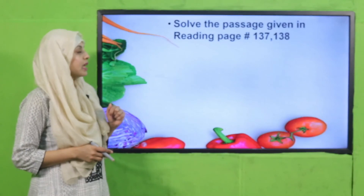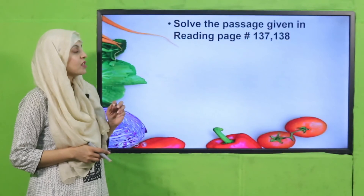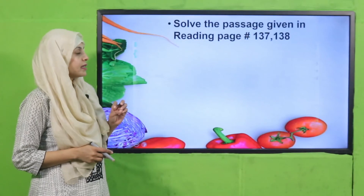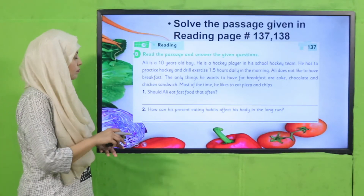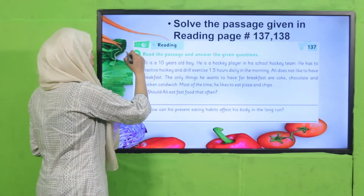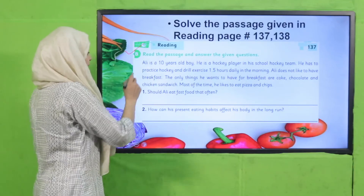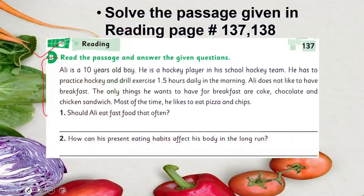Now quickly note down your homework: solve the passage given in reading, page numbers 137 and 138. Here is the reading passage - read it and then answer the questions in the comments. Ali is a ten-year-old boy and a hockey player in his school hockey team.